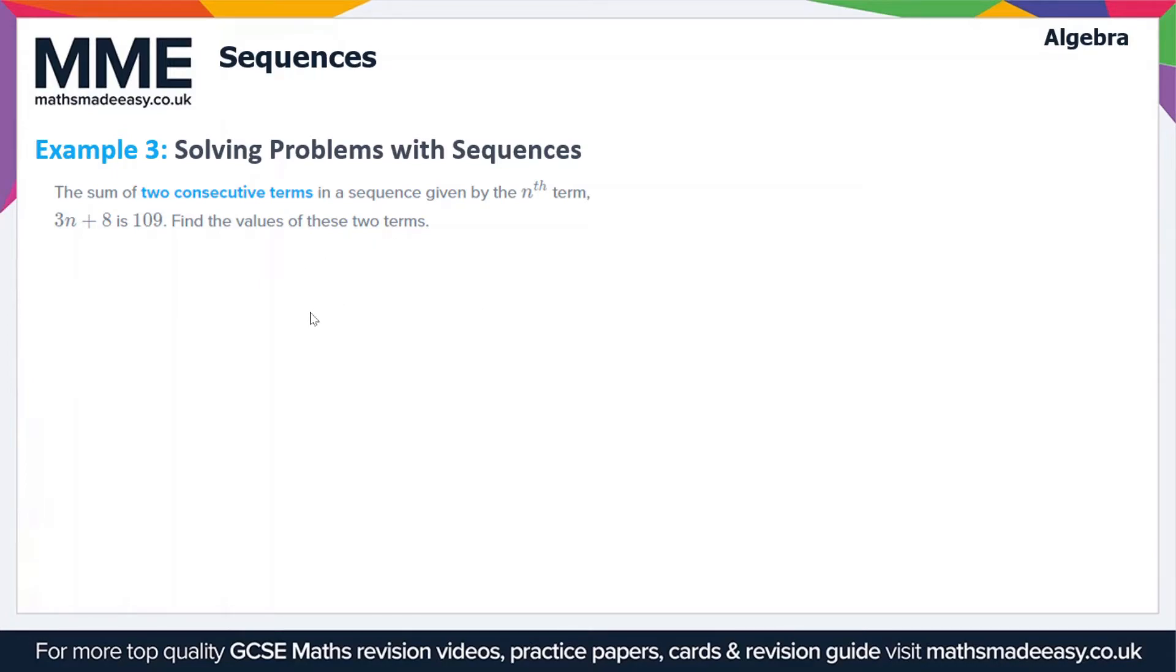Moving on, let's have a look at this last example which is slightly different. We've got the sum of two consecutive terms in a sequence given by the nth term 3n plus 8 is 109. Find the values of these two terms.